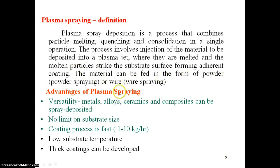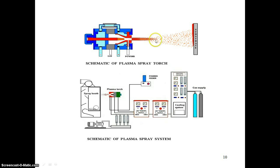The material can be fed in the form of powder, known as powder spraying, or wire, known as wire spraying. Advantages of plasma spraying include versatility, no limit on substrate size, flat coating process, low temperature of the substrate, and thick coatings can be developed. The plasma spray apparatus includes the powder fed into the plasma jet forming coatings on the substrate, with connections to a power supply, cooling system, gas supply system, powder feeder, and spray booth.